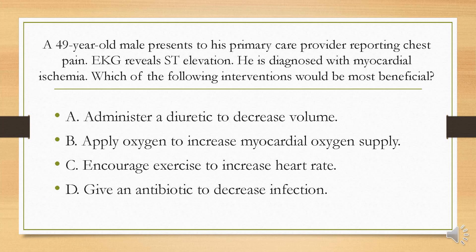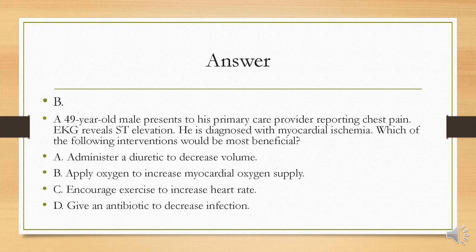A 49-year-old male presents with chest pain; the EKG reveals ST elevation and he is diagnosed with myocardial ischemia. Which intervention would be most beneficial? Is it A, administer a diuretic to decrease volume; B, apply oxygen to increase myocardial oxygen supply; C, encourage exercise to increase heart rate; or D, give an antibiotic to decrease infection? Your answer is B. Increased myocardial oxygen supply is indicated to treat ischemia. The heart rate should be decreased to reduce cardiac workload, and oxygen is most beneficial because you're trying to get oxygen to tissues that have been deprived of it.